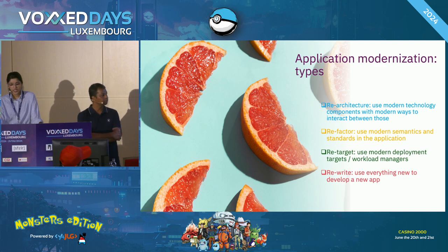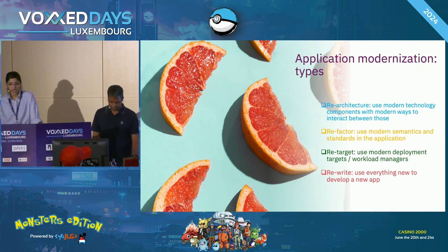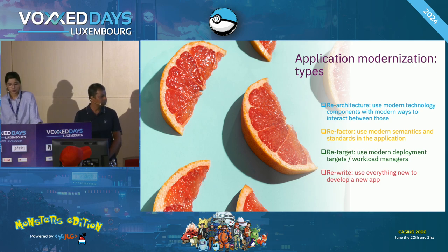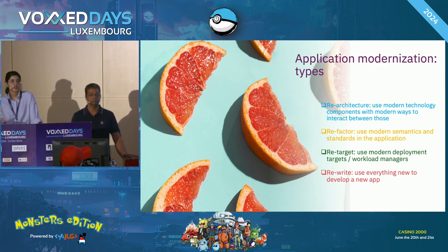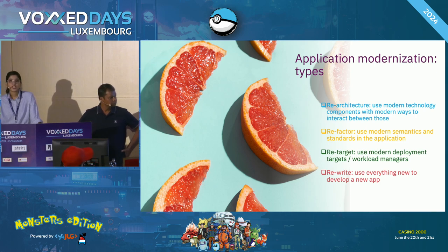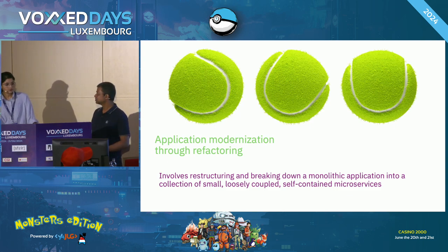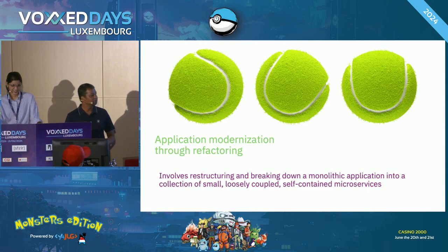Next is retargeting — shifting to modern deployment targets or workload managers, such as moving from on-premise applications to modern cloud platforms using Docker for containerization and Kubernetes for orchestration, enhancing scalability, maintainability, and operational efficiency. Next is rewriting — developing a new application from scratch using modern technology. However, rewriting is easy to say but hardest to do in practice; it is very time-consuming and takes a lot of effort.